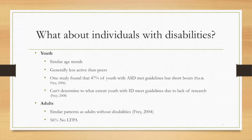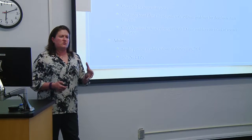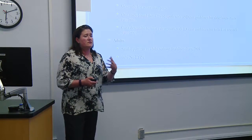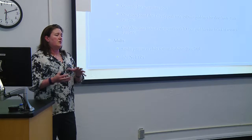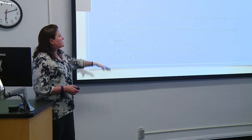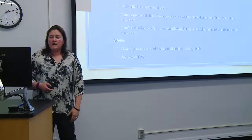So what does this look like for individuals with disabilities? We see similar age trends to typically developing peers. One of the challenges when looking at physical activity for individuals with disabilities is that we can't say that all people with disabilities are the same. We tend to look at intellectual disabilities versus autism versus physical disabilities, breaking it up to find some barriers that way.